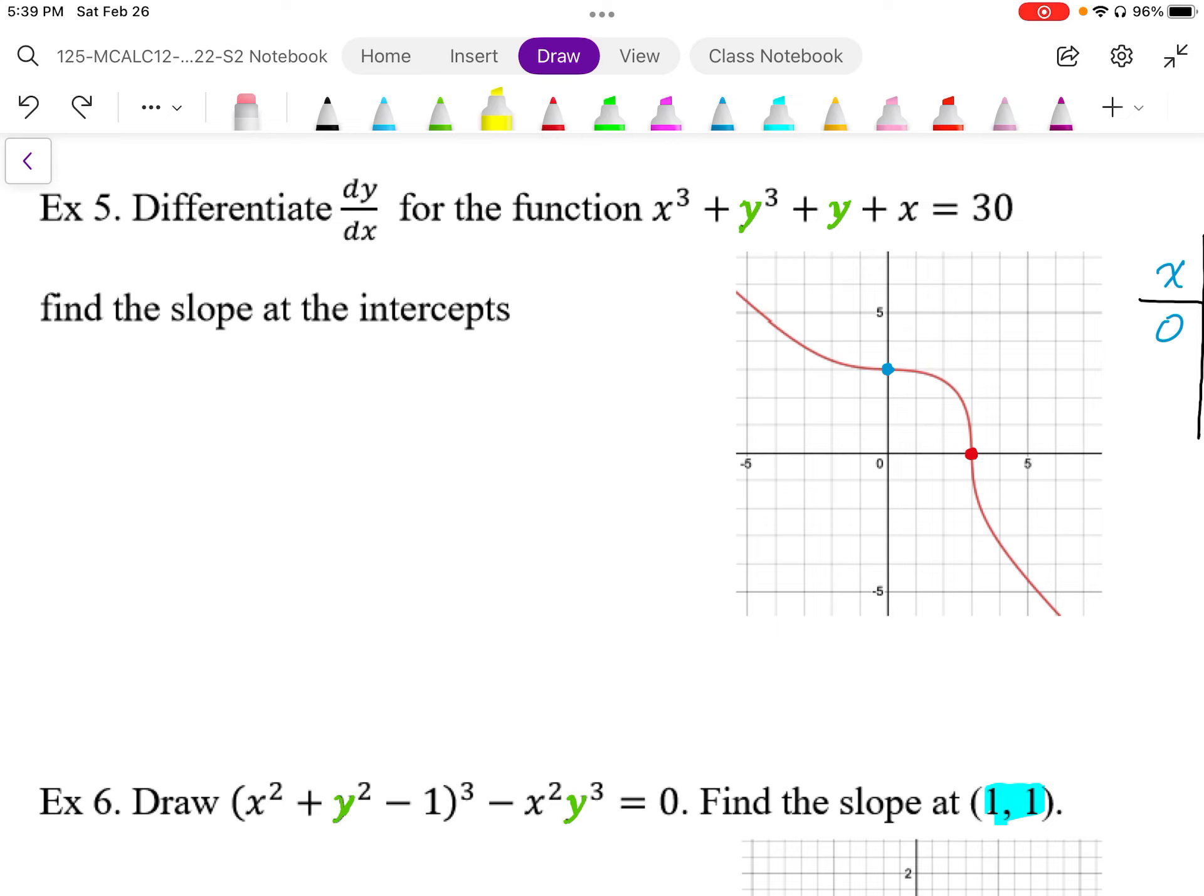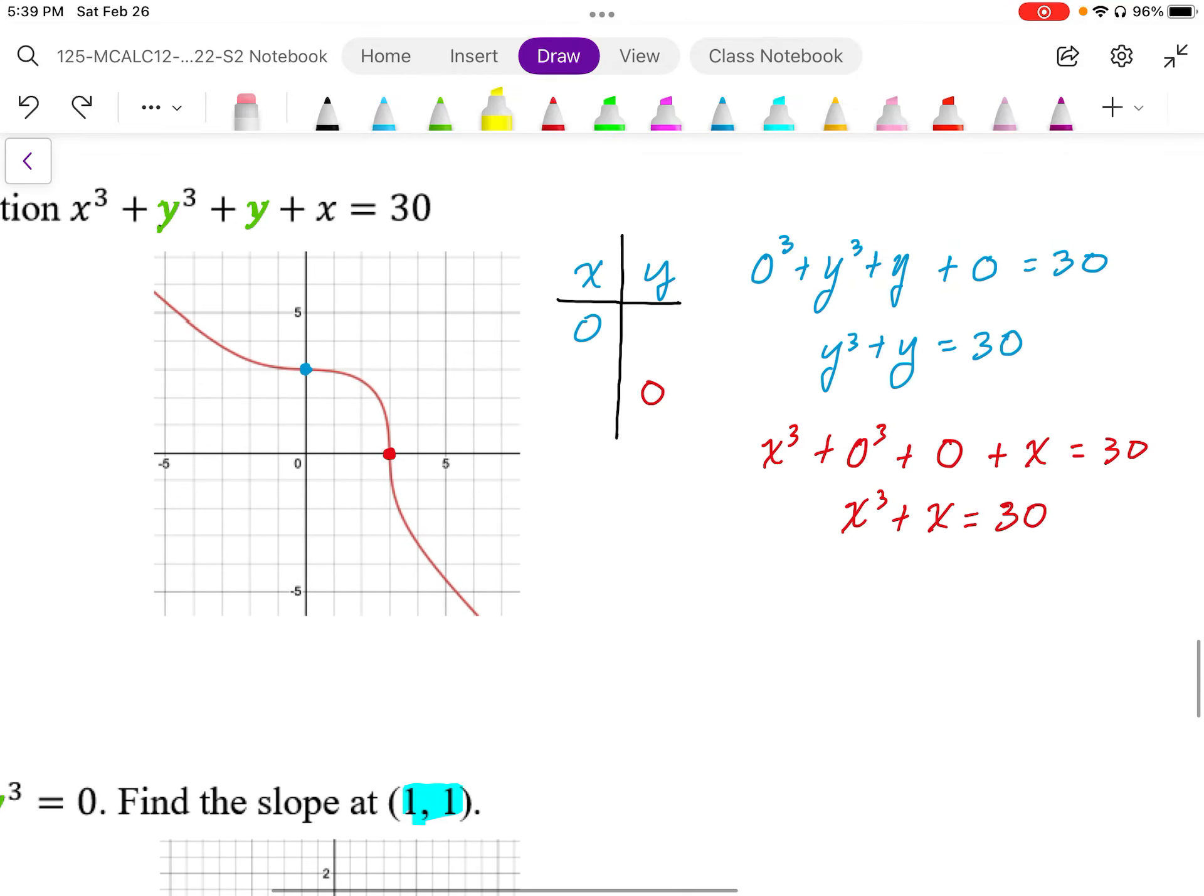So we want to find the slope at the intercepts here. First thing is we want to find the x and y coordinates of the intercepts, so we need to plug in x to 0.